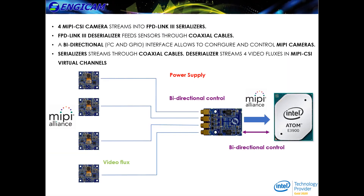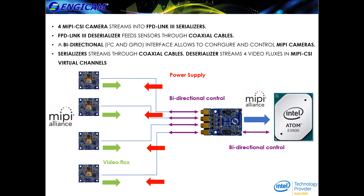We developed a camera based on the OV5640 sensor and a FPLink3 serializer. These cameras can be connected, fitted, and controlled through a single coaxial cable, tested up to 4 meters long.